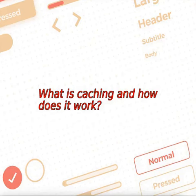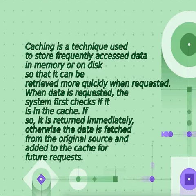Caching is a technique used to store frequently accessed data in memory or on disk so that it can be retrieved more quickly when requested. When data is requested, the system first checks if it is in the cache — if so, it is returned immediately. Otherwise, the data is fetched from the original source and added to the cache for future requests.